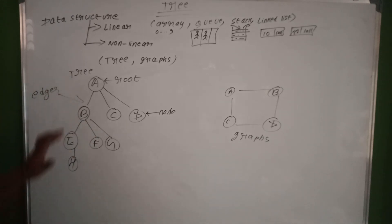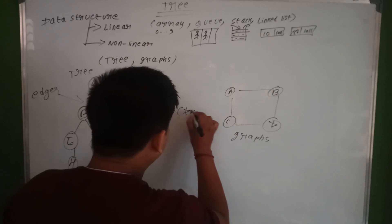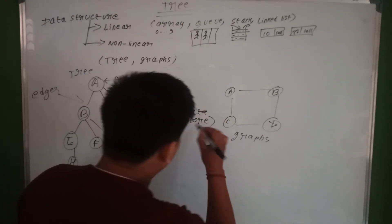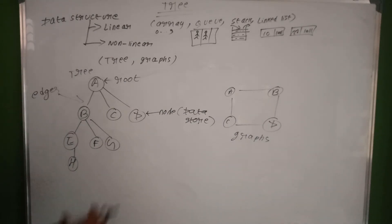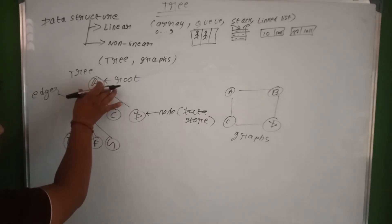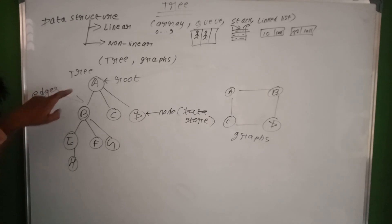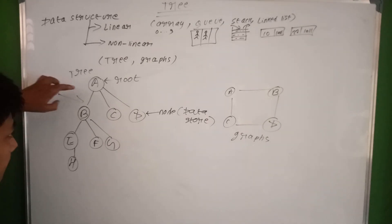Each node should be stored with data. In this structure, let's suppose we have a parent and a child. Let's see how the parent-child relationship works — a parent node can have child nodes connected to it.